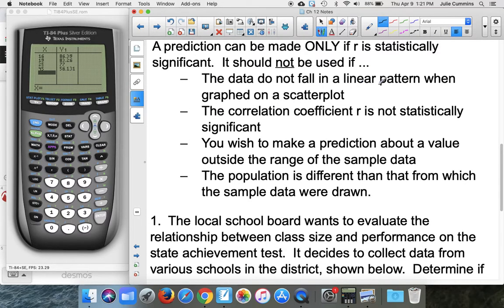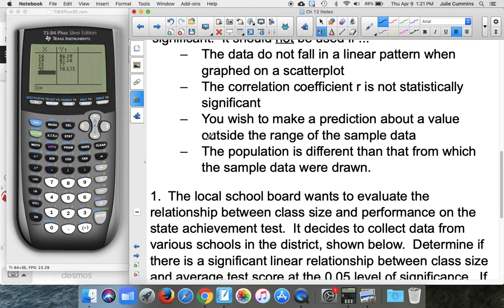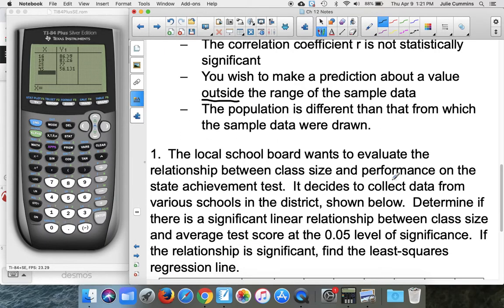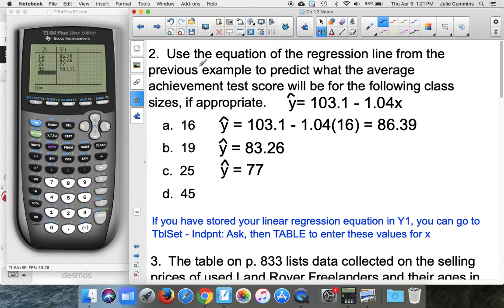We should not use this if we're not a linear pattern, which we saw we were. The correlation coefficient was statistically significant. This one: if you wish to make a prediction about a value outside the range of the sample data. Remember, our original sample data was for class sizes from 15 to 29. So using this to estimate for a class of 45, 45 is way outside of the sample data, so it is really not appropriate to use this.